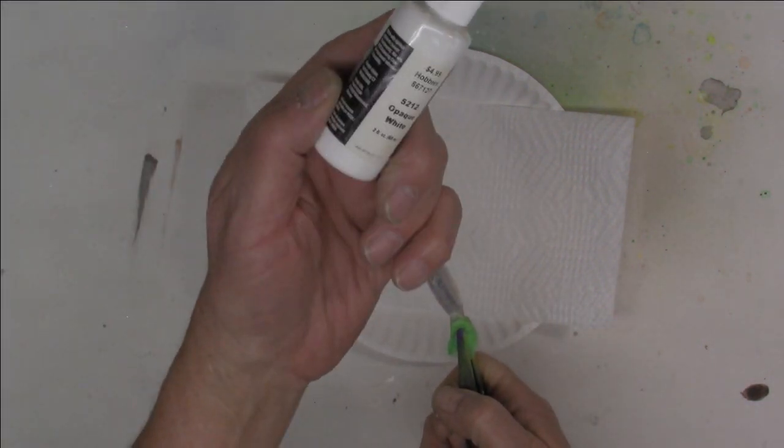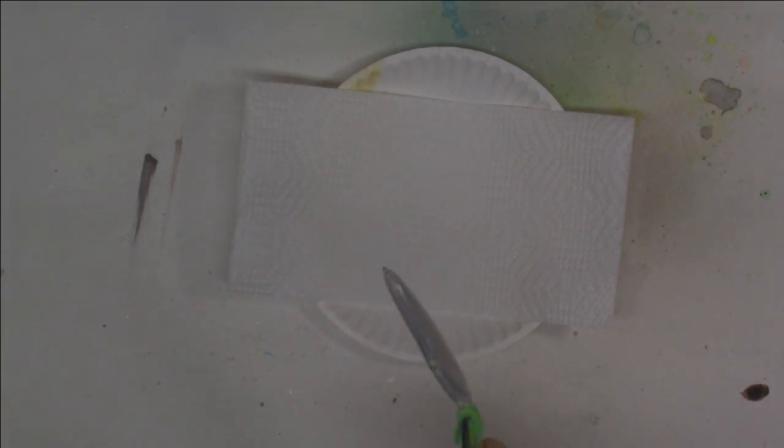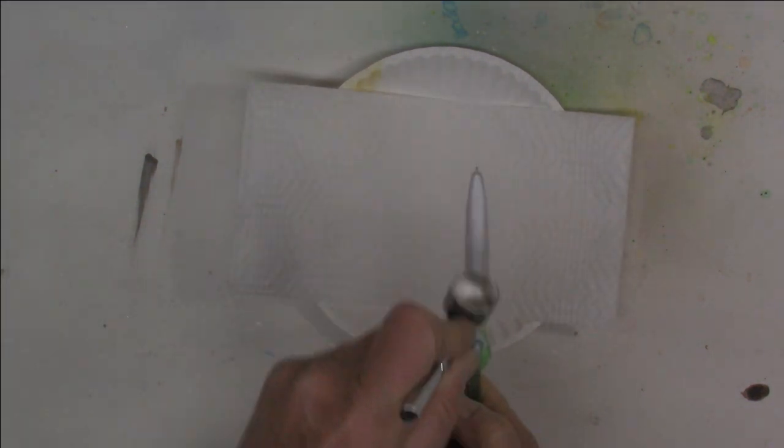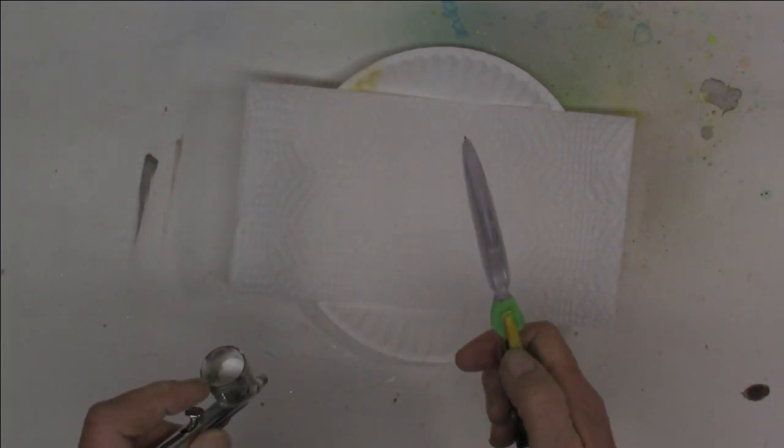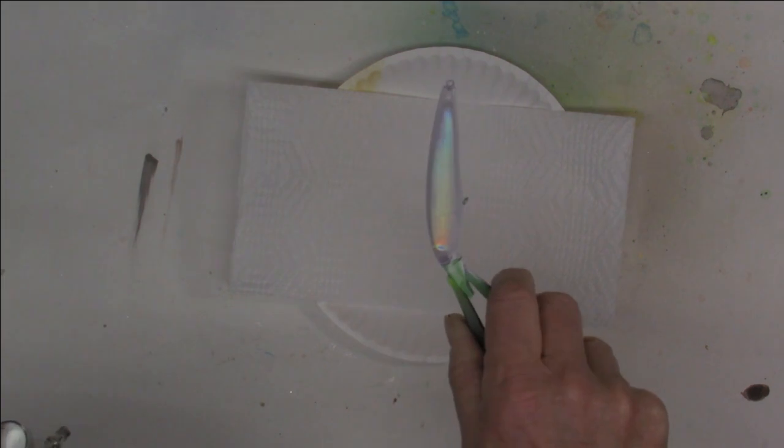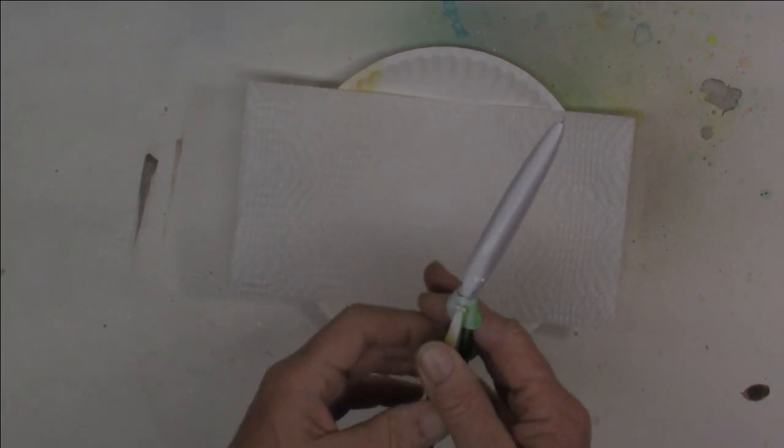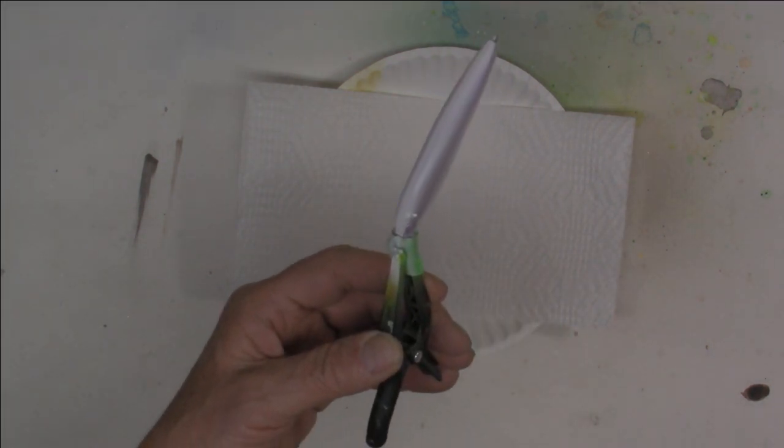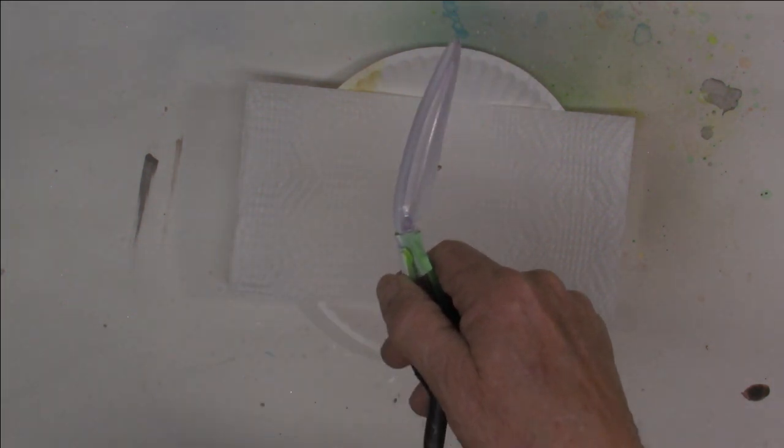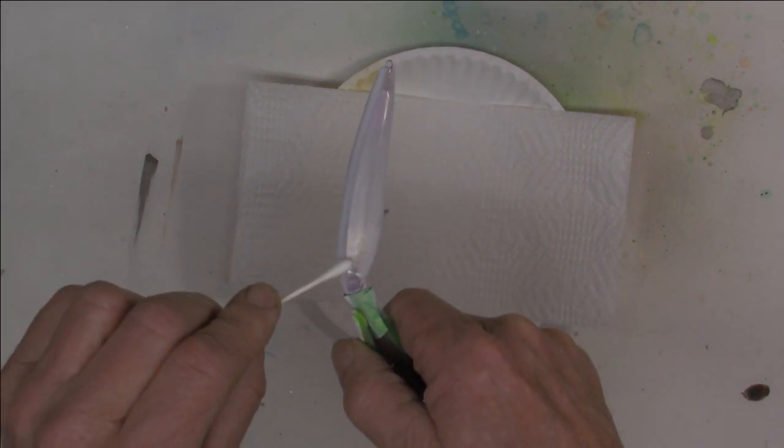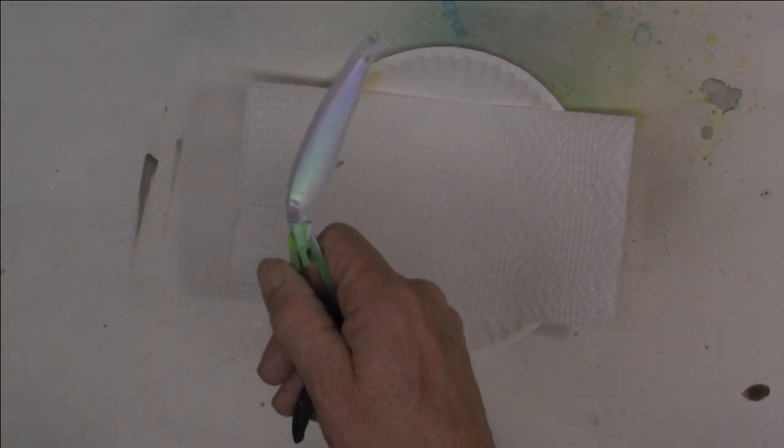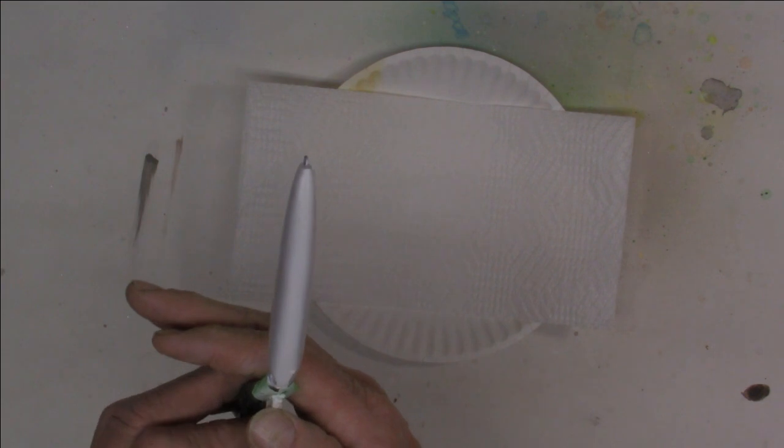Going to start with Createx Opaque White, as always, to get that base coat down. Just run a little bead right down the belly. A little more right down there. The nice thing is, because we're not doing the sides - I got a little spot there. Can you see that? Let's take a Q-tip and we'll just get rid of it. There we go.